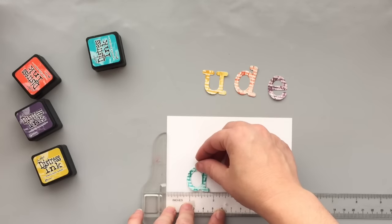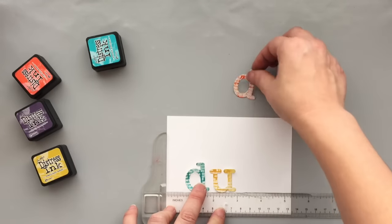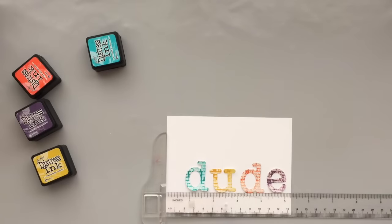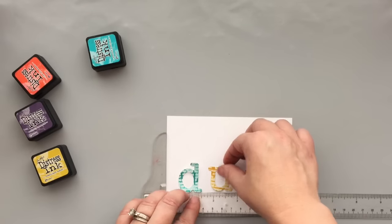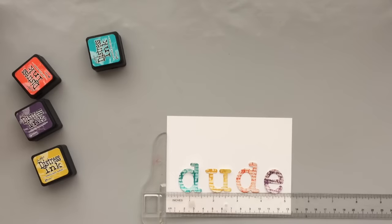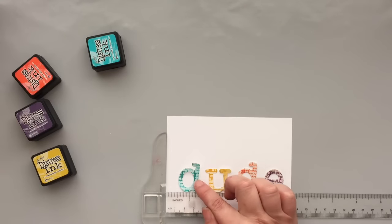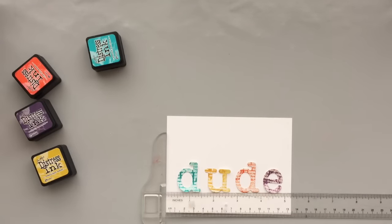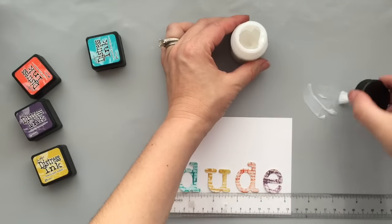To help me keep these letters straight when I adhere them down, I grabbed a T-square ruler. Anything that you have that's straight will work - a regular ruler, a piece of cardstock, anything to help you keep it straight. I'm not really so good at that. I'm fiddling around with it, figuring out the placement and color. I want to make sure that I have the colors where I like it.